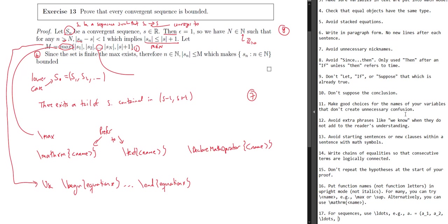Getting back to the proof: 'since the set is finite, the max exists.' Here when you say 'the set,' it's not clear what set you're referring to. Instead, just say 'since' and reference the specific set you mean — even writing the whole set again would be fine. Just make it clear what set you're talking about.